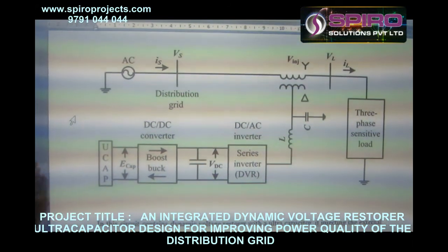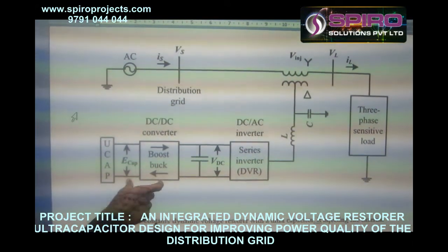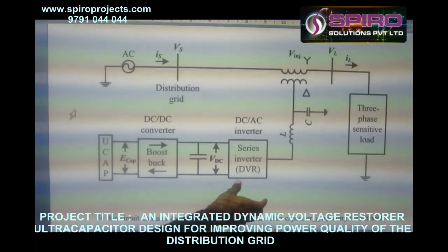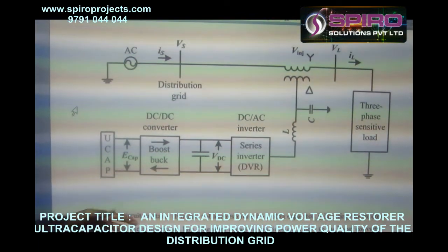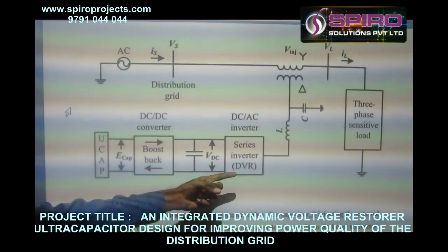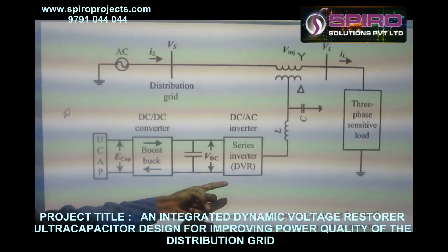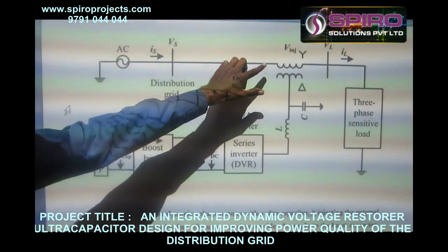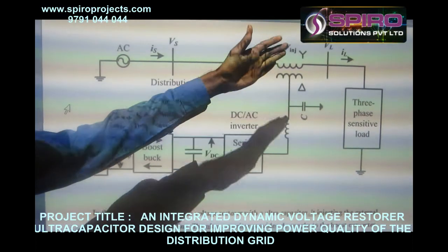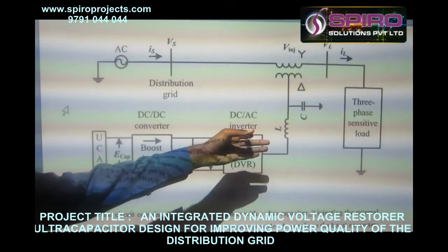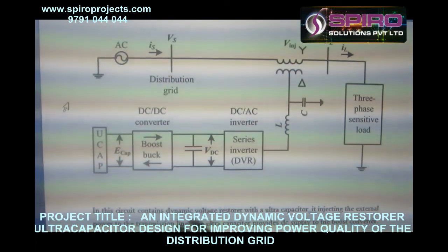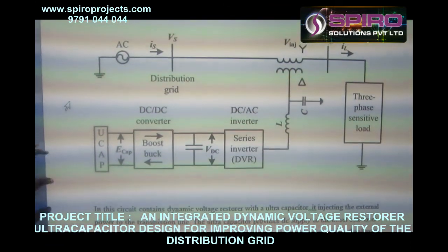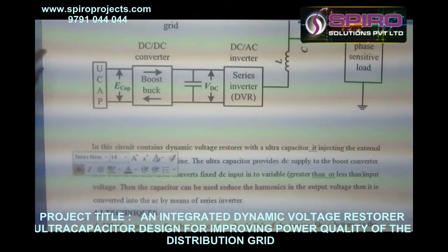The buck-boost converter performs DC reducing and boosting operations. In the ultra capacitor, we cannot directly control the voltage level, that is why I am using the buck-boost connector. Finally, I need to inject the power in AC form, so I am using a series inverter — it is like a Dynamic Voltage Restorer. I am injecting reactive power to the transmission line during voltage sag, and absorbing power during voltage swell, using inductance.